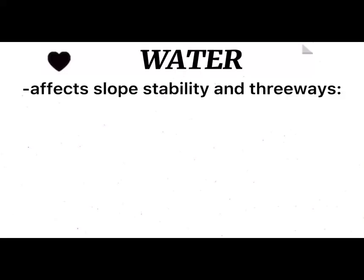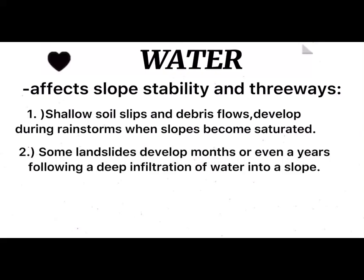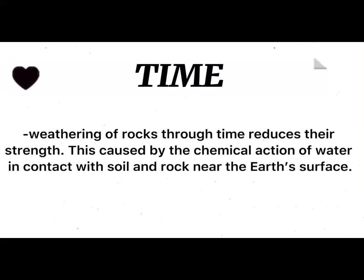Water affects slope stability in three ways: 1. Shallow soil slips and debris flows develop during rainstorms when slopes become saturated. 2. Some landslides develop over months or even years following deep infiltration of water into a slope. 3. Water erosion of the base of a slope decreases its stability. Water is a substance composed of hydrogen and oxygen, existing in gaseous, liquid, and solid states, and is one of the most plentiful and essential of compounds. Weathering of rocks through time reduces their strength, caused by the chemical action of water in contact with soil and rocks near the earth's surface.